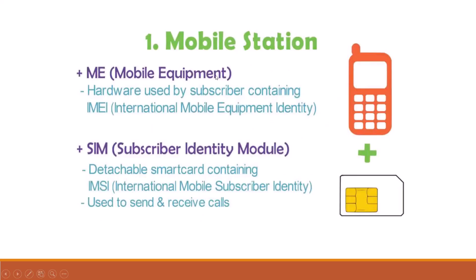First of all, it is Mobile Station. It has two components. Mobile Equipment — it is a hardware used by the subscriber to access the network, identified by IMEI number, which stands for International Mobile Equipment Identity. SIM — Subscriber Identity Module — is a detachable smart card containing IMSI, International Mobile Subscriber ID number. It allows the user to send and receive calls.